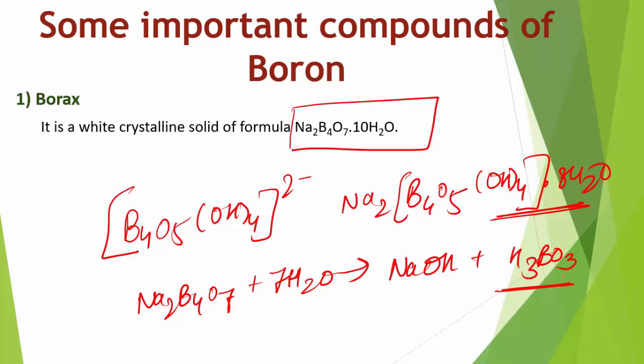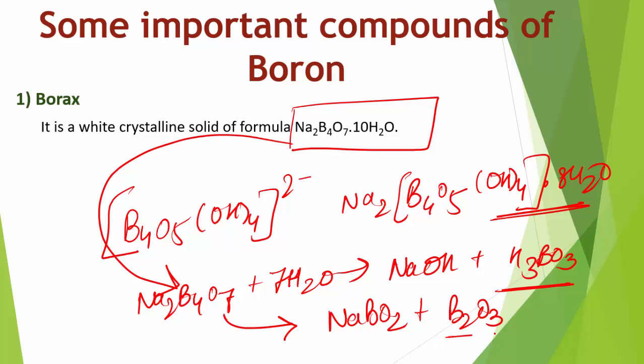When the fused borax is further heated, it becomes a transparent liquid that solidifies into a glass-like material called the borax bead. Na₂B₄O₇·10H₂O heated gives sodium metaborate Na₂B₄O₇, then further heating gives NaBO₂ plus B₂O₃ (boric anhydride). Metaborates of many transition metals have characteristic colors, so the borax bead test is used to identify them in the laboratory.